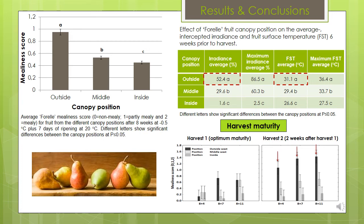From our results, it is clear that fruit from different canopy positions have microstructural differences, and these differences can be linked to the incidence of mealiness. Larger outside canopy fruit resulted in larger pores and cavities due to cell sliding and breaking. Late harvest maturity also increases fruit size and mealiness. Mealiness is induced pre-harvest and currently managed post-harvest. The key to understanding mealiness development lies in the underlying micromechanisms.